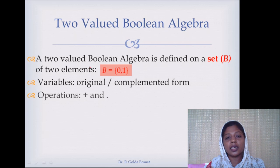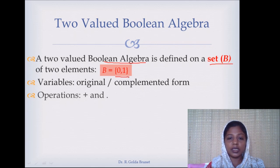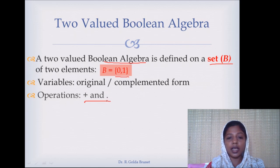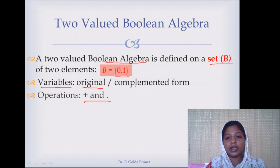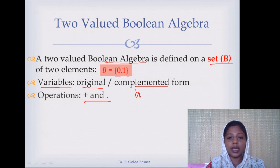Like any other algebraic structure, Boolean algebra is also defined on a set with two elements — 0 and 1 — and we have a set of operations defined over these sets, which is the logical OR operator and the logical AND operation. The variables in Boolean algebra will be represented either in their original form or in the complemented form. That is, if I use a variable A, simply writing it as A is the original form, and if we use the complement, it is in the complemented form.